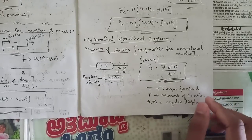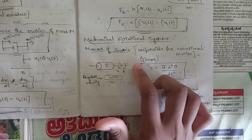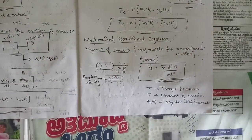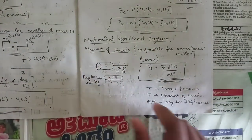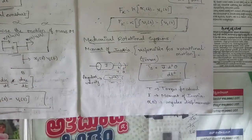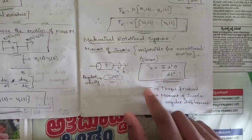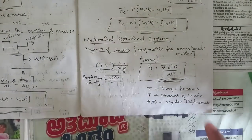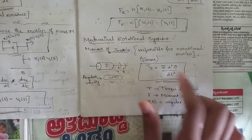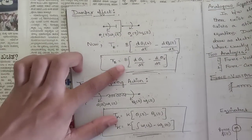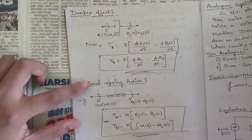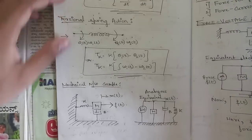We also discussed mechanical rotational systems. In translational systems the parameter is mass; in rotational systems it is moment of inertia J. Displacement corresponds to angular displacement θ, and force corresponds to torque T. The equation is T(s) = J·(d²θ/dt²). We also discussed the damping friction and torsional spring action in rotational systems.